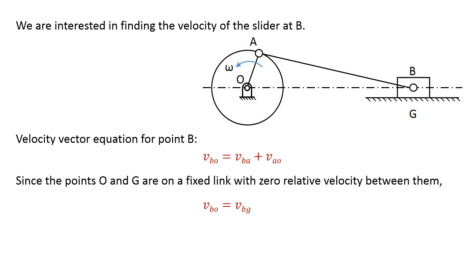Since the points O and G are on fixed link with zero relative velocity between them, the velocity of B relative to O is same as the velocity of B relative to G. So in the velocity vector equation, we can replace the velocity of B relative to O by the velocity of B relative to G.